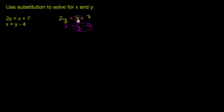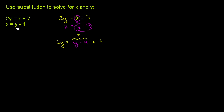So let's do that. If we substitute y minus 4 for x in the top equation, it becomes 2y is equal to — instead of an x, the second constraint tells us that x needs to be equal to y minus 4 — so we write y minus 4, and then we have plus 7. All I did here is substitute y minus 4 for x. The value here is now we have one equation with one variable, and we can just solve for y.